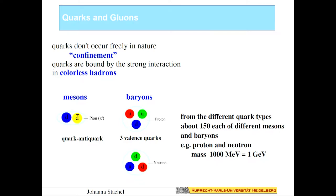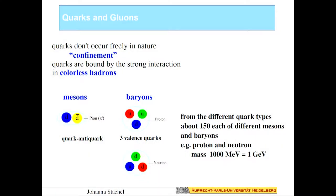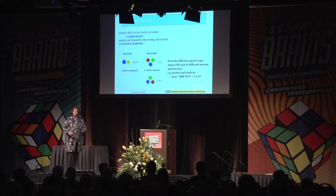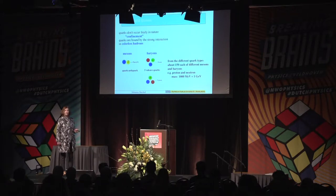There are two ways to form colorless objects. One is to combine a quark and an anti-quark of a color and an anti-color — these particles we call mesons. The other way is to take three quarks of different colors — these particles, like the proton (two up quarks, one down quark) or the neutron (two down quarks, one up quark), we call baryons. From the different quark types we can form about 150 known mesons and an equal number of known baryons. The mass is not the mass of bare quarks but is generated by spontaneous symmetry breaking, so the proton and neutron have a mass of about 1 GeV.